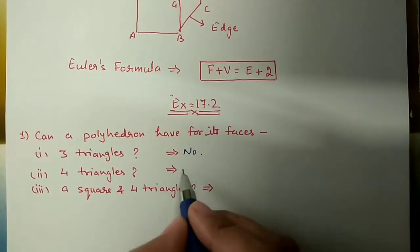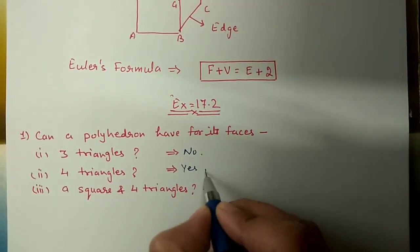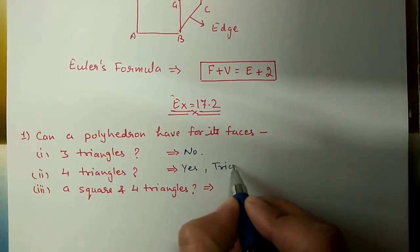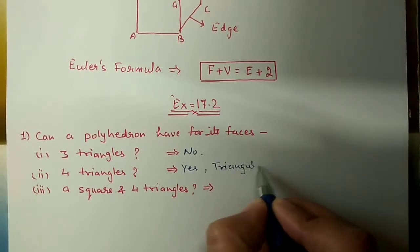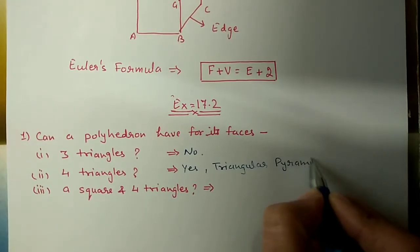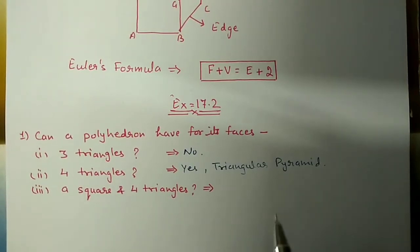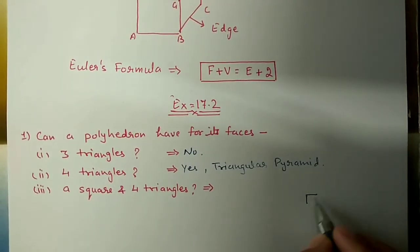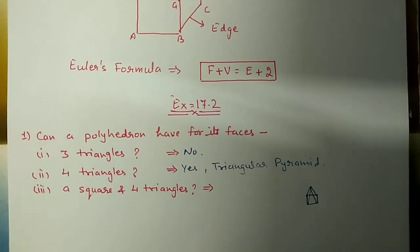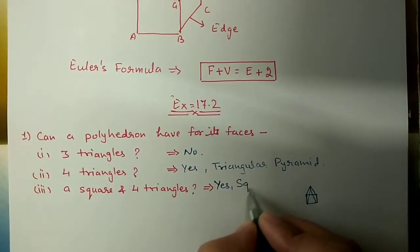Minimum four faces are required; below that we cannot make a solid shape. So for the first part it will be no, and for the second part - four triangles - it will be yes. We can make a triangular pyramid. Also, with a square and four triangles, if we join them we will get a square pyramid, so yes for that part too.